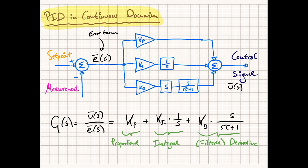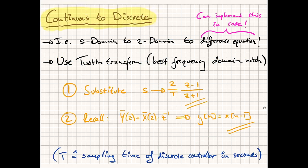Finally, the results of the three paths — proportional, integral, and derivative — are summed to give the final control signal. This control signal is then passed to the input of the system we wish to control. We've now seen the continuous-domain representation. Let's see how we can convert that to a discrete-time representation.